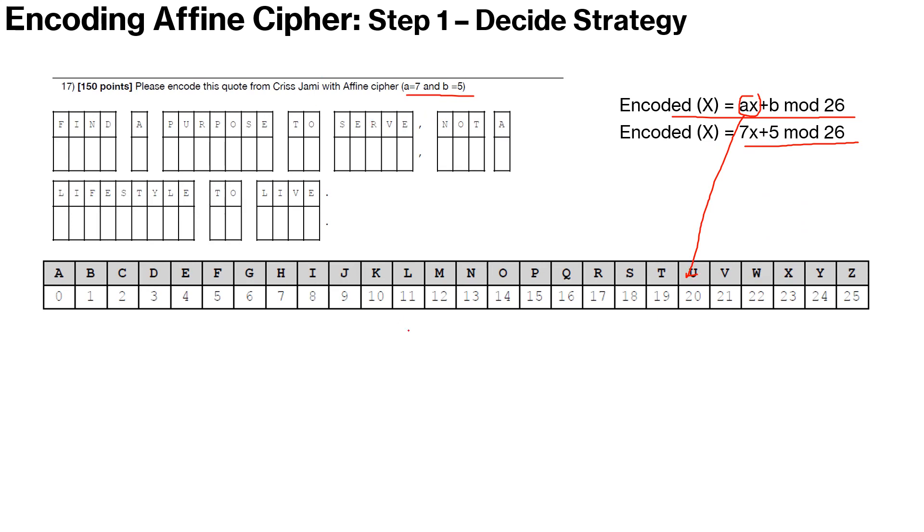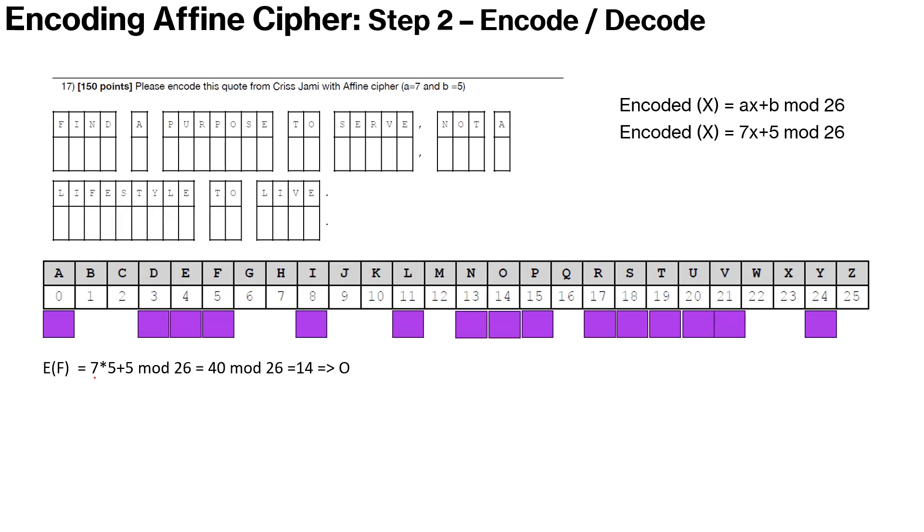So what we will do now is we will start looking at, in this case, the strategy we will use is that we will try to find out what all alphabets have been used in this code and find the encoded value only for those alphabets. So I went ahead and mapped the alphabets which are to be encoded. This is the set here and we will start encoding. So we will start encoding F here. So F is 5 out here. So 7 times 5 plus 5 mod 26, that is something what F will be. 7 times 5 plus 5 mod 26, which is 40 mod 26, which is 14 and 14 here maps to O. So encoding of F is O.